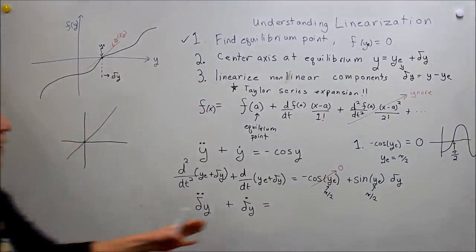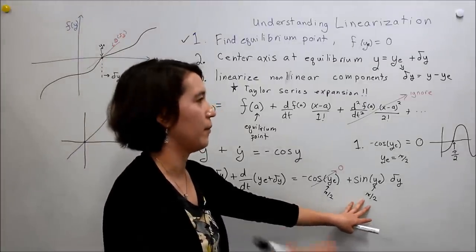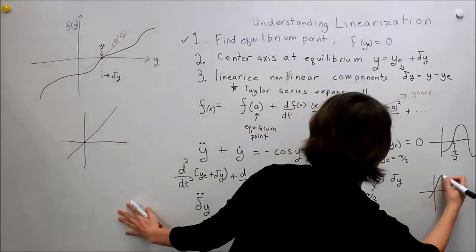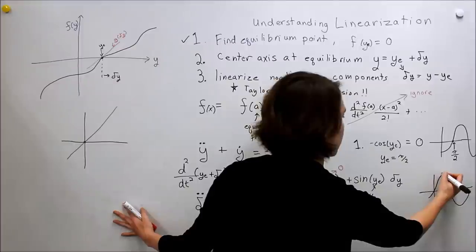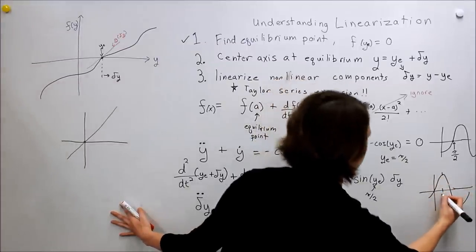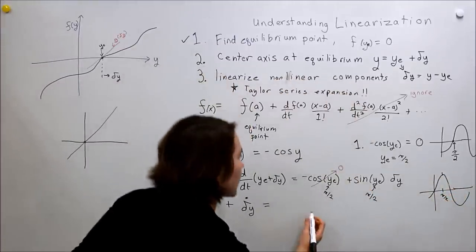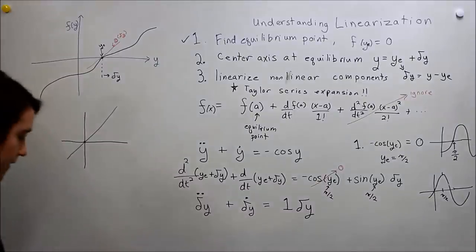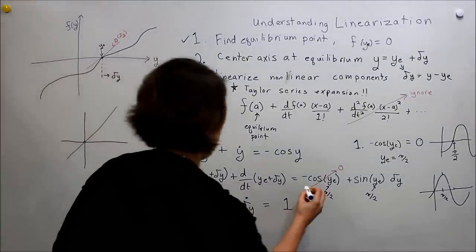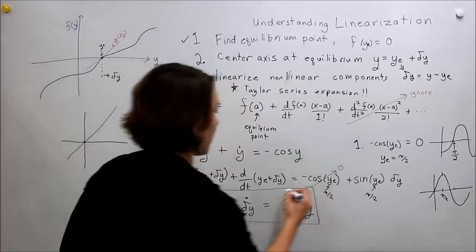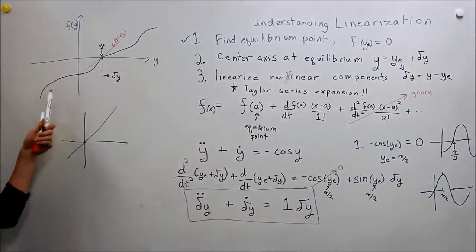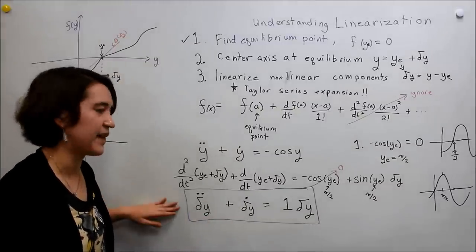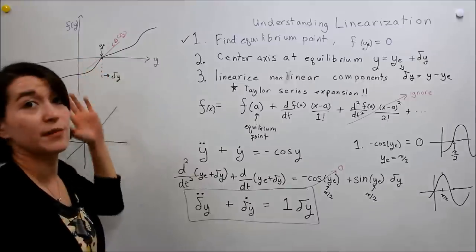We're almost there. The first term went to zero. We need to find sin(π/2), which equals one. So we get one times δy. This is our linearized version of the equation: δ̈y + δ̇y = δy. This is the fully linearized version of our system at the equilibrium point.